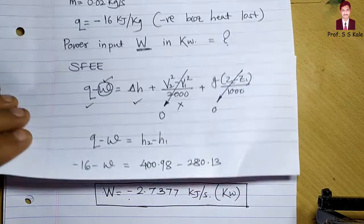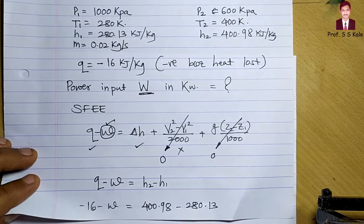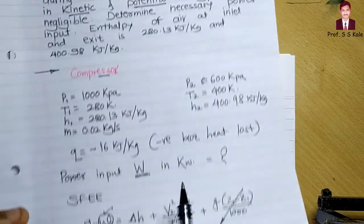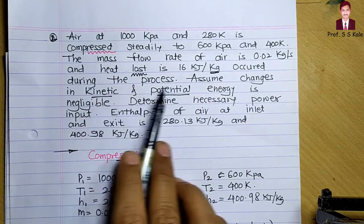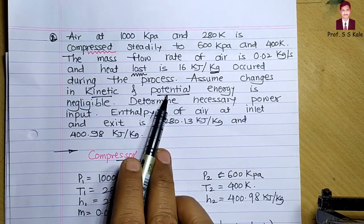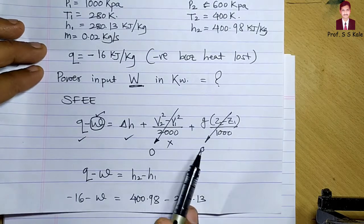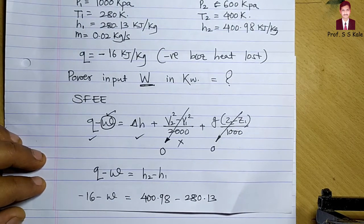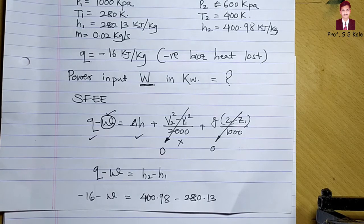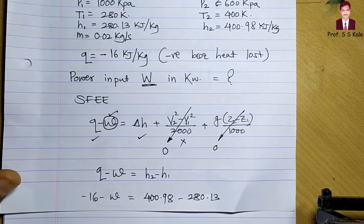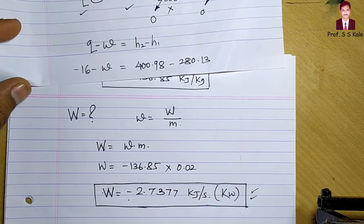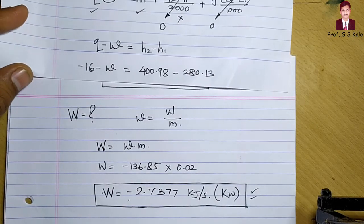Remember that for the compressor we neglect changes in kinetic and potential energy. In this problem they mentioned it explicitly, but even if not given, we would still neglect it because for a compressor these changes are considered to be zero. So this is our final answer. Thank you very much.